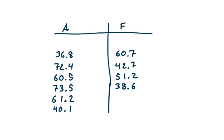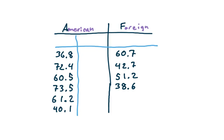It gives us the raw data, and I've recorded that in the table here. I've used A for the American airports and F for foreign airports, with all of the raw data — the number of passengers in millions. I've listed all of the data in columns with an extra column for each. We're going to call these X₁ to indicate they come from the first population, and these are X₂.